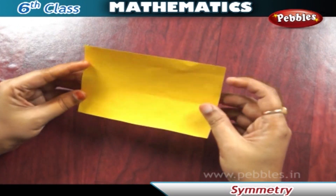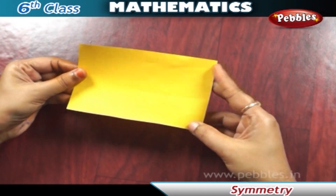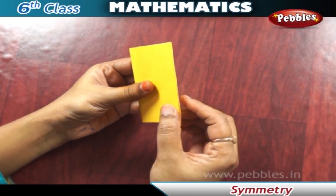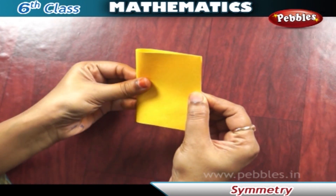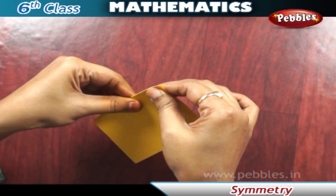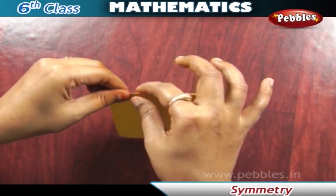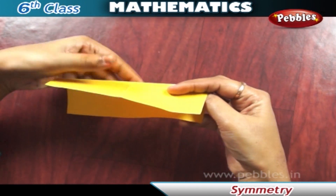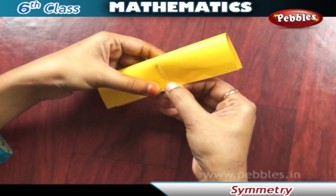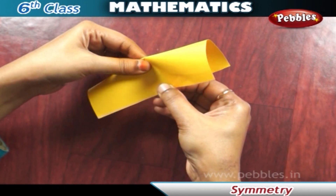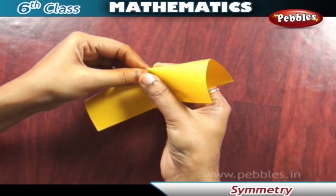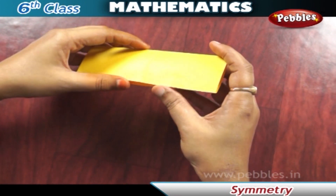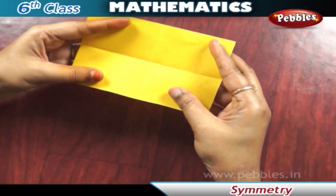Take a rectangular sheet like a postcard. Fold it once lengthwise so that one half fits exactly over the other half. We can say this fold is a line of symmetry. Now open it up again and fold along its width in the same way. This second fold also forms a line of symmetry.